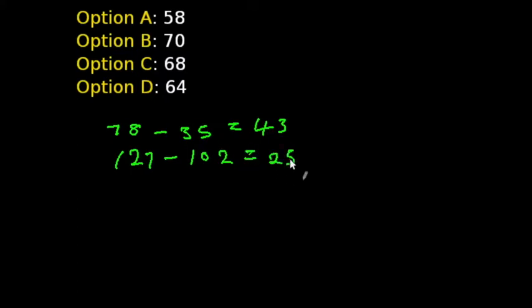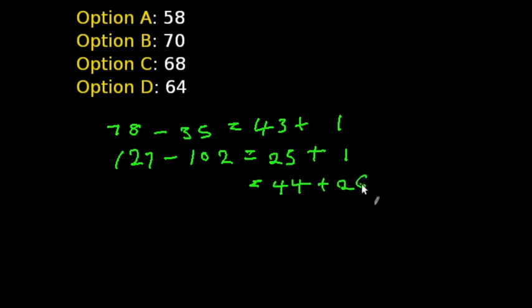Just subtracting the highest page from the lowest page won't give us the right answer. If he read from page 35 to 78, that means he also read page 35 — subtraction overlooks the starting page. So we add plus one to each range, making it 44 plus 26.